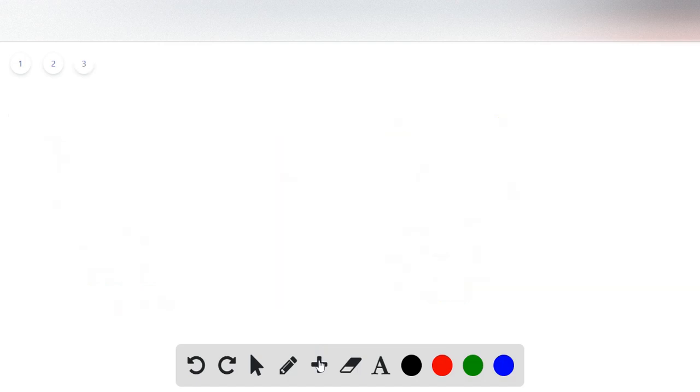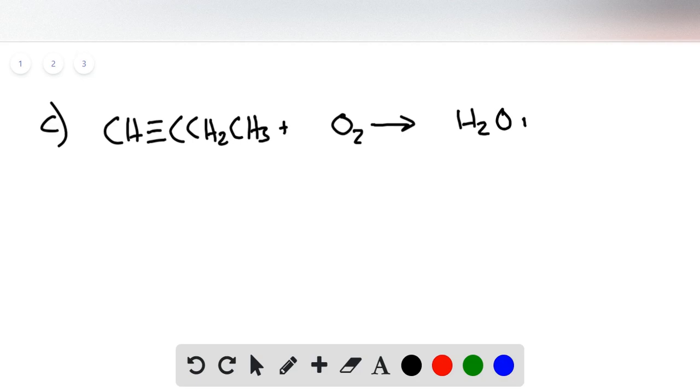So for part C, we have an alkyne. We have CH triple bond, C, CH2, CH3, plus O2, all phases are gas phase, giving H2O plus CO2. Once again, we count our carbons. We're going to go ahead and add a coefficient of two right away. And we see that we get eight carbons out of here.